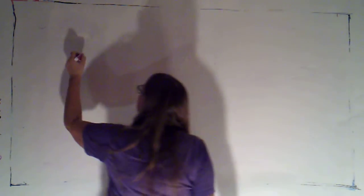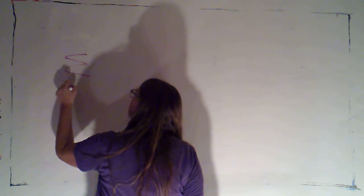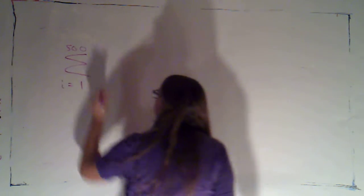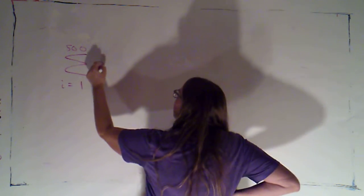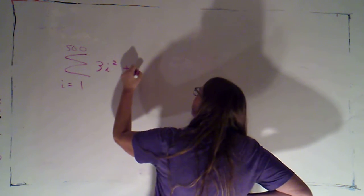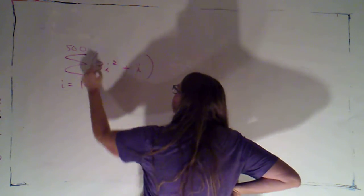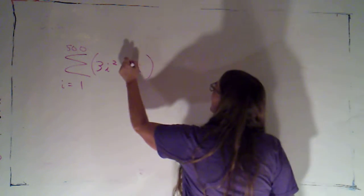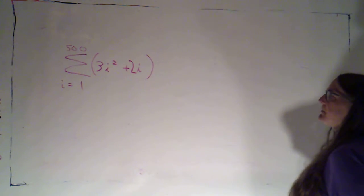So let's try the sum as i goes from one to five hundred of three i squared plus two i. Why not? Okay.